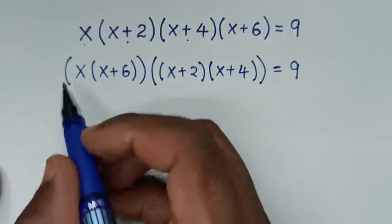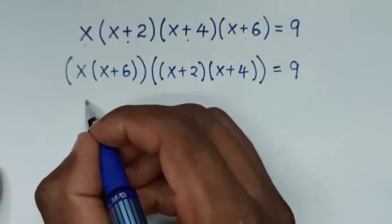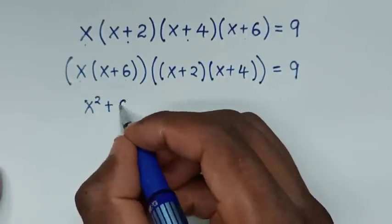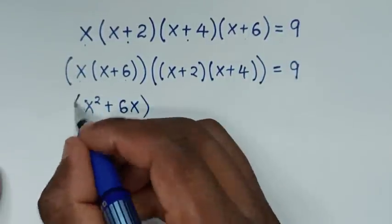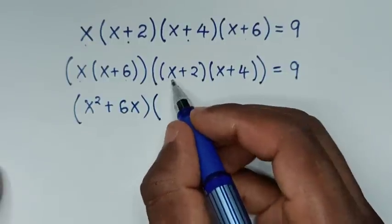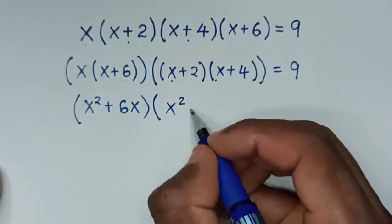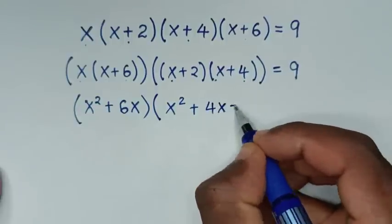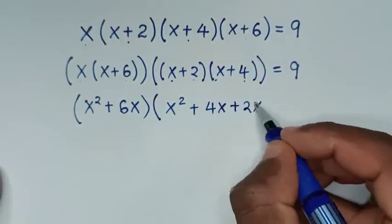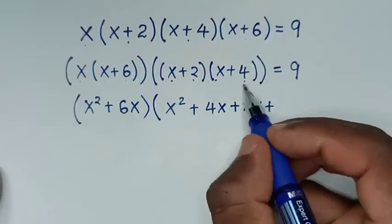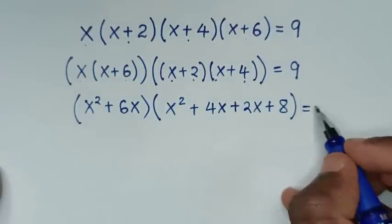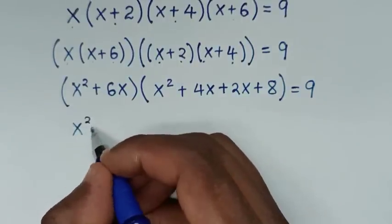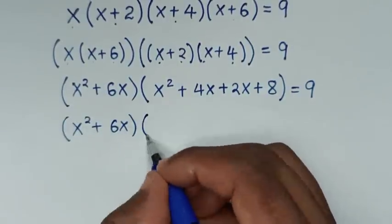In the next step, expanding: x times x is x², and x times 6 is 6x, giving x²+6x. Then x times x is x², plus x times 4 is 4x, plus 2 times x is 2x, plus 2 times 4 is 8 — giving x²+6x+8. So we have (x²+6x)(x²+6x+8) = 9.